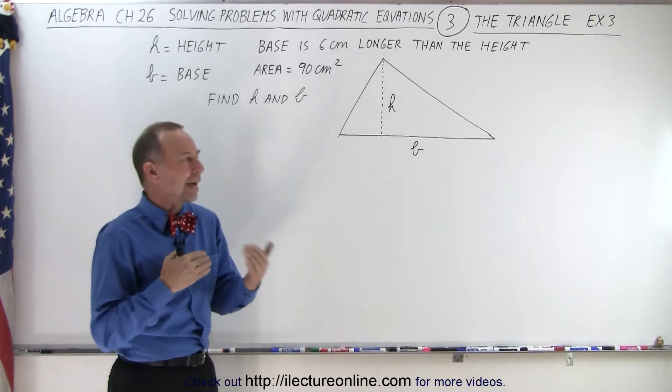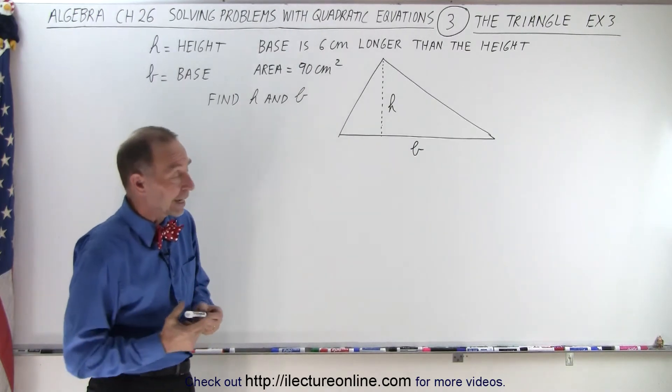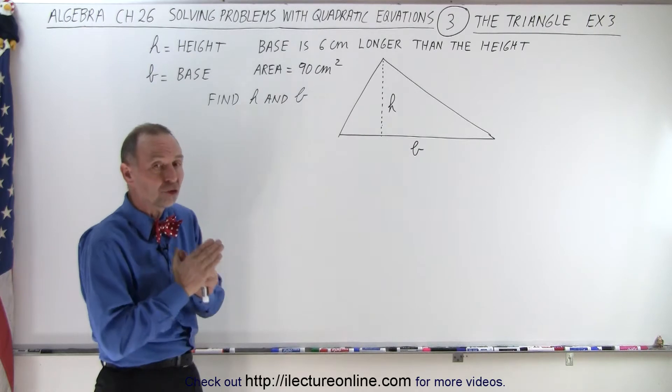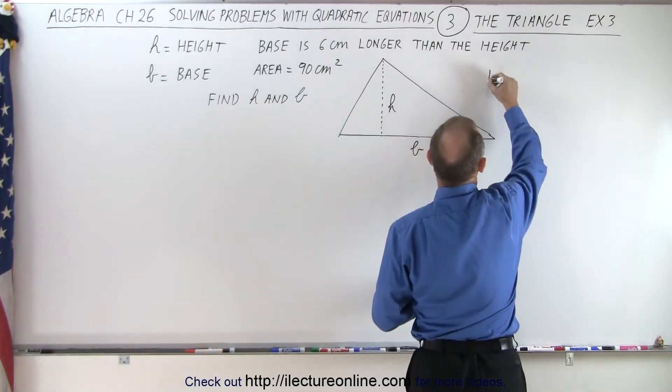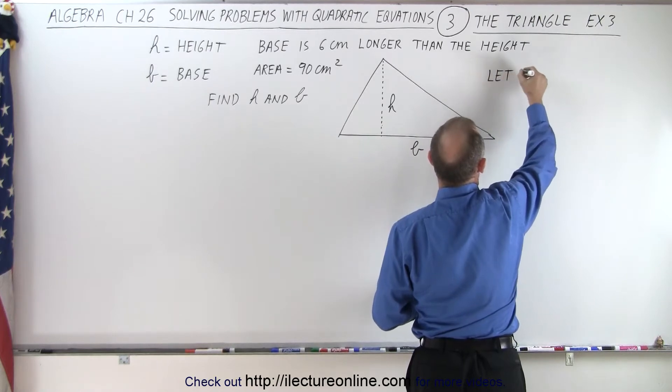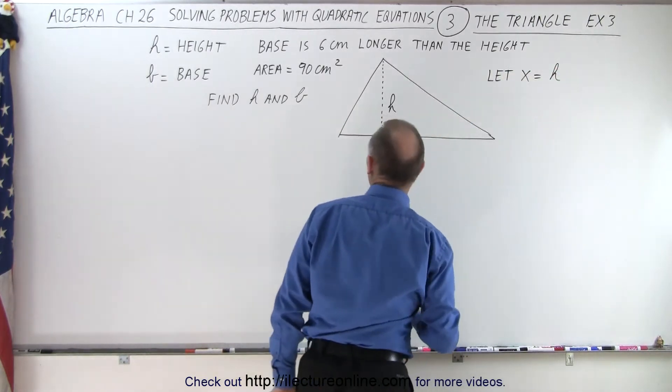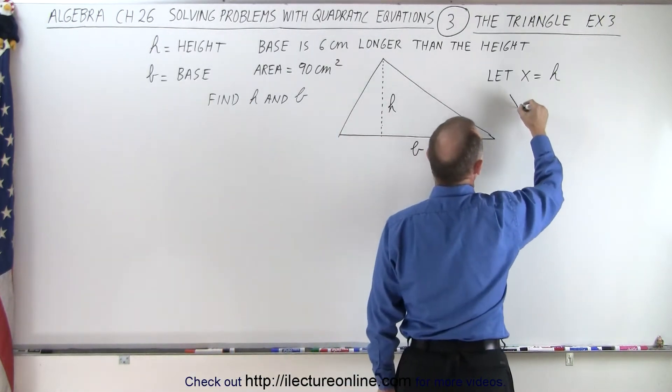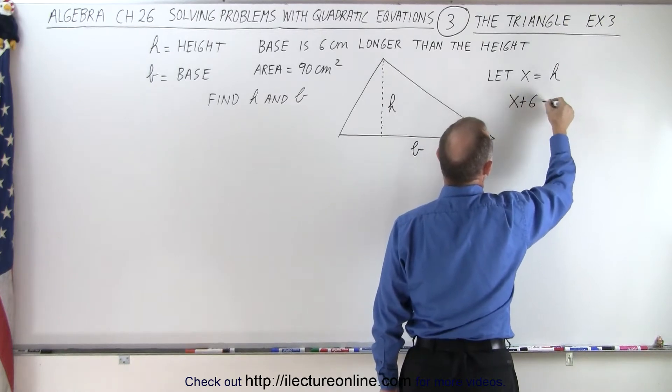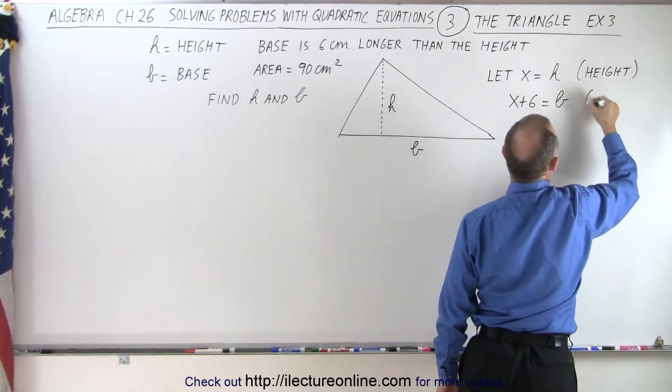First, we need to define the height and the base in terms of an unknown variable, let's call it x. We want to assign x to the smallest dimension. Since the height is the smallest dimension, we're going to let x equal the height. And since the base is 6 centimeters longer, we can say that x plus 6 is equal to the base.